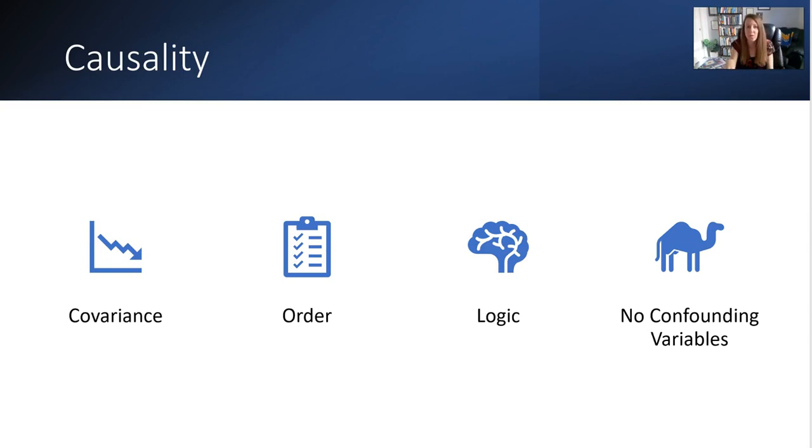Next we're looking at order. The independent variable has to happen first, and then the dependent variable change happens. This was our problem with the rain example and the umbrellas.